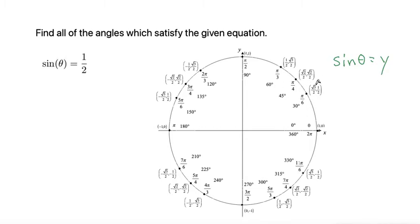So here's one example that the y-coordinate is equal to 1 half at an angle of pi over 6 or 30 degrees. I'll do both radians and degrees. So it's either pi over 6 or 30 degrees.